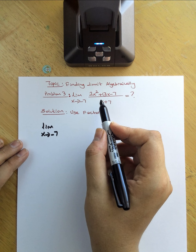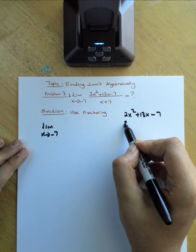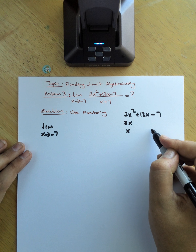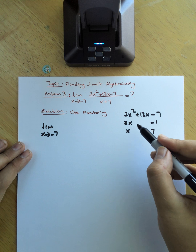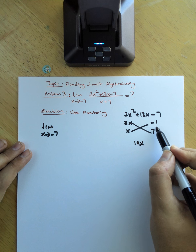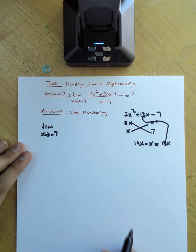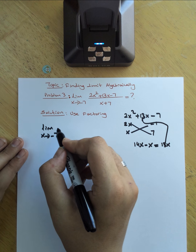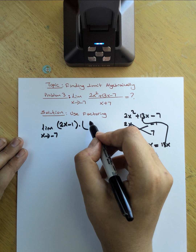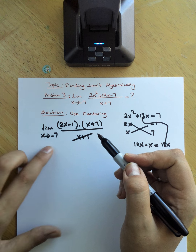I can factor the numerator 2x squared plus 13x minus 7. Using the AC method: factors are (2x and x) and (7 and negative 1). Cross-multiplying: 2x times 7 is 14x, and x times negative 1 is negative x, giving 13x as the middle term. So the factored form is (2x minus 1)(x plus 7), and dividing by (x plus 7), the (x plus 7) terms cancel.